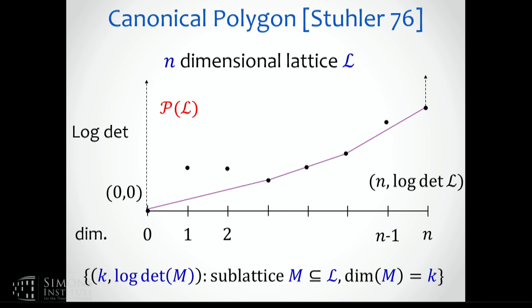First the picture: this is a 2D plot where the x-coordinate is the dimension of sub-lattices, and the y-coordinate plots the log determinant of sub-lattices of that dimension. We're mostly interested in, for every dimension, the sub-lattice of that rank of smallest determinant — so we only care about the bottom of this curve. Zero on the x-axis corresponds to the trivial lattice with only the origin, whose log determinant we declare to be 0. At the very end, you get n times log determinant of the lattice.